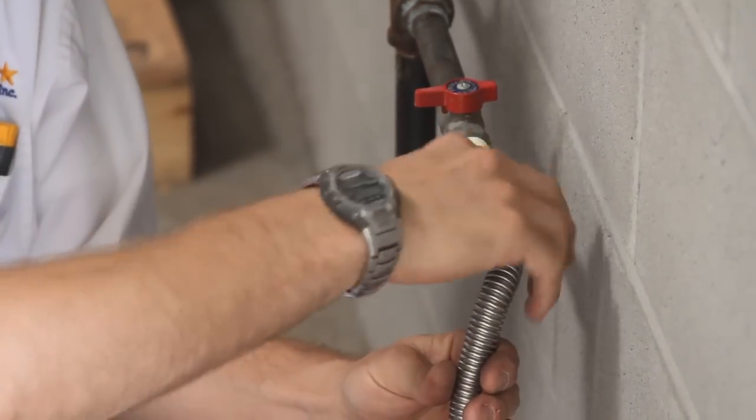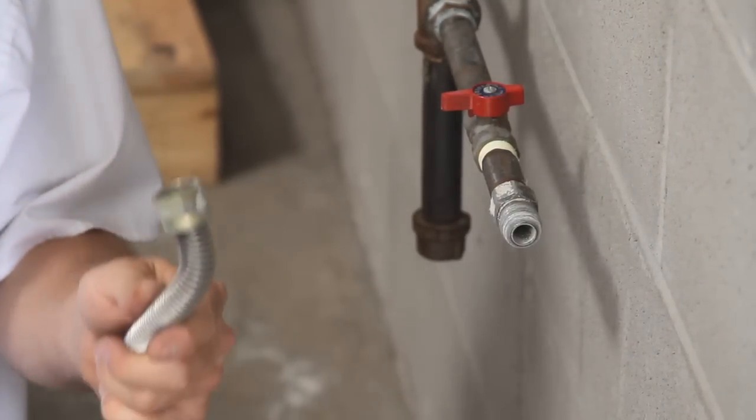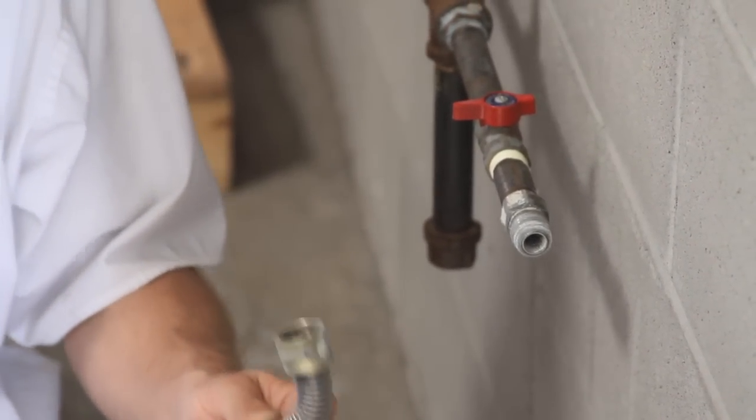Once you've loosened it, you can then remove the gas line, and you're going to do the same thing on the oven portion, remove it from the oven using your two sets of channel locks.